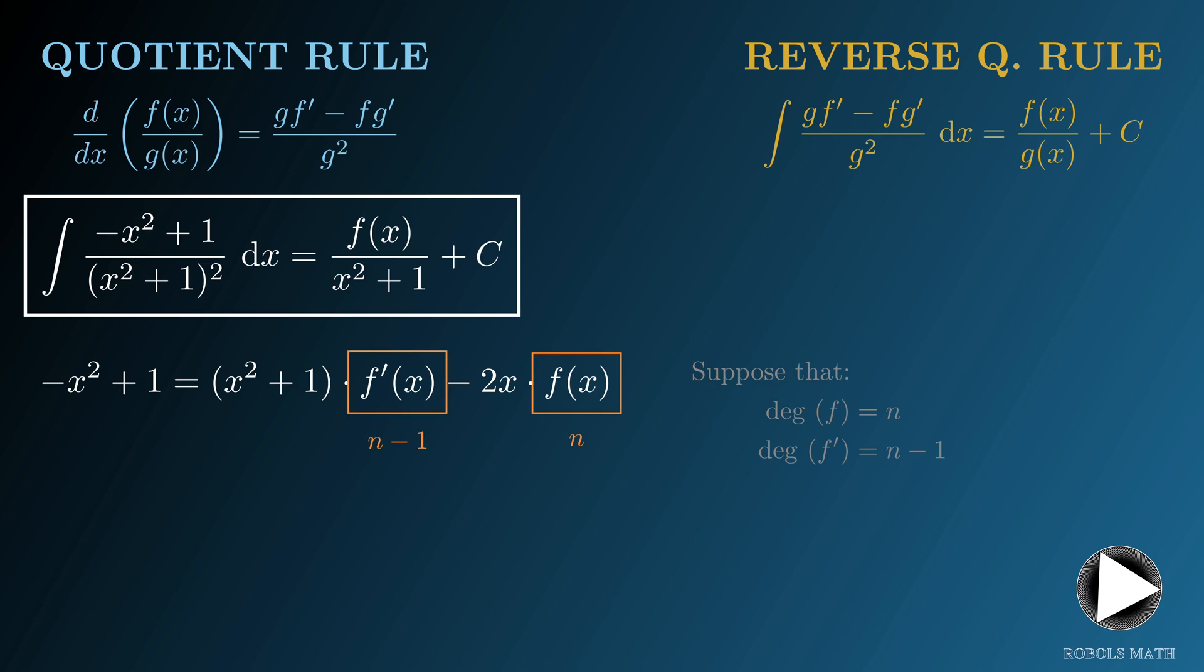This then means that x squared plus 1 times f prime is of degree 2 plus n minus 1, or simply n plus 1.